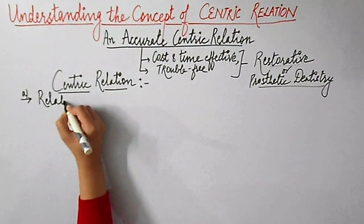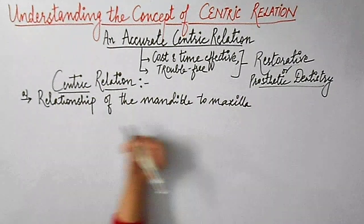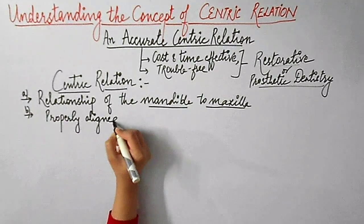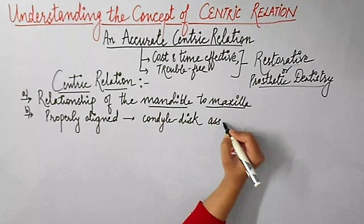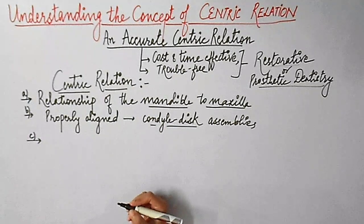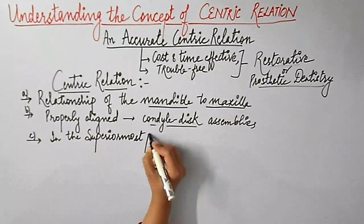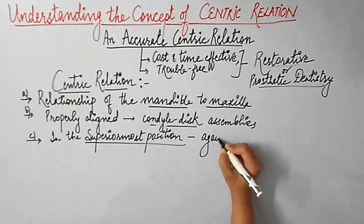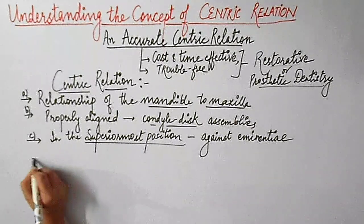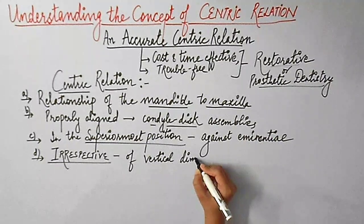We literally do the dissection of the definition of centric relation here. The centric relation is the relationship of the mandible to the maxilla when there is a properly aligned condyle disc assembly, and that also when the condyle disc assemblies are in their most superior most position against their respective eminentia. This has to be there irrespective of the vertical dimension or the tooth position.